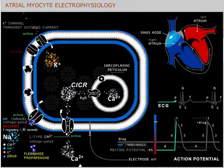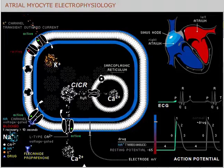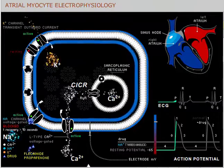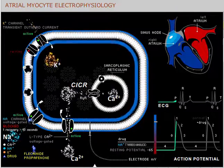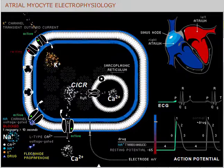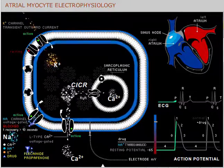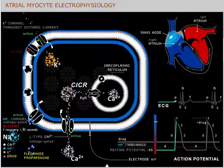Flecanide and propafenone are referred to as class 1c antiarrhythmic agents because they dissociate very slowly from the sodium channel. The time constant for recovery of channel function following exposure to these drugs is longer than 10 seconds.